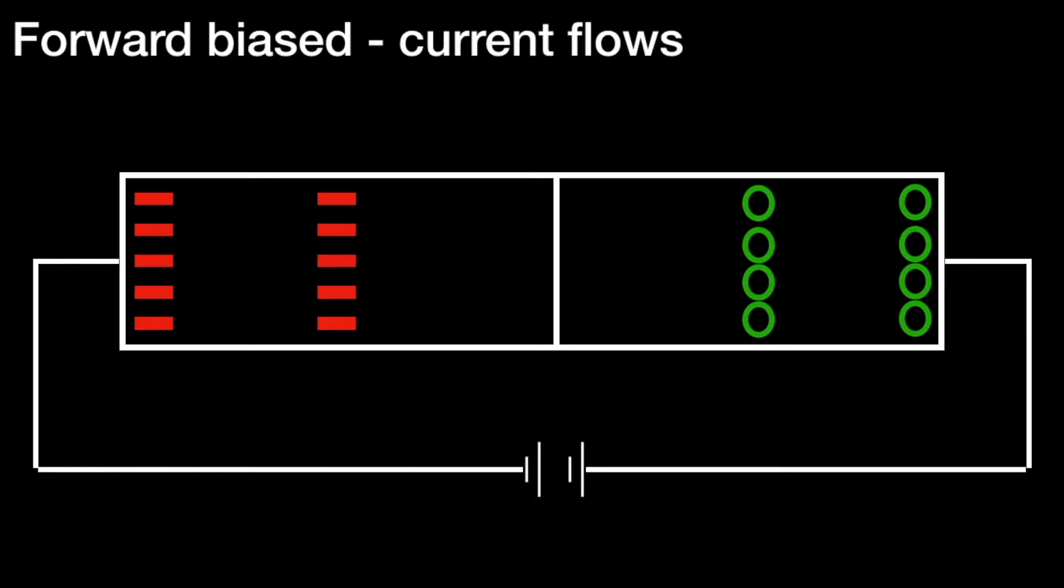If we turn the battery around, the charge carriers then span the entire length of the diode and current can flow. The status of the diode now is that it is forward biased.